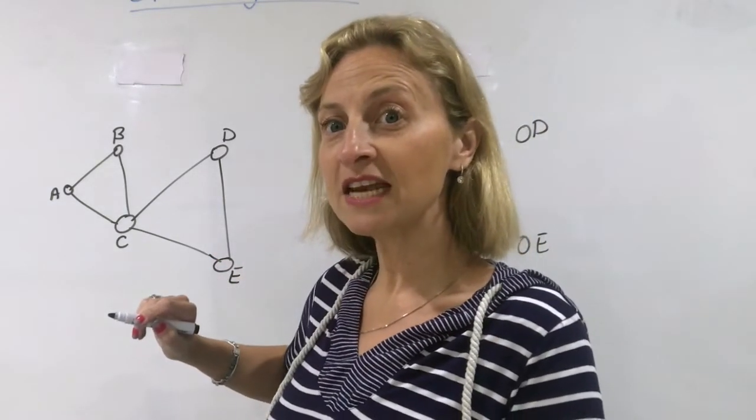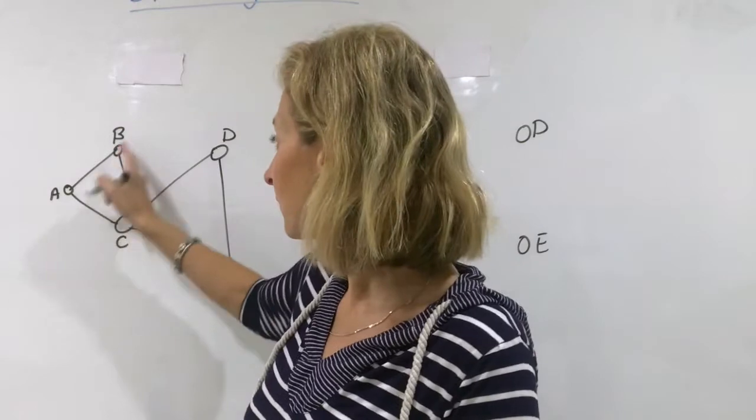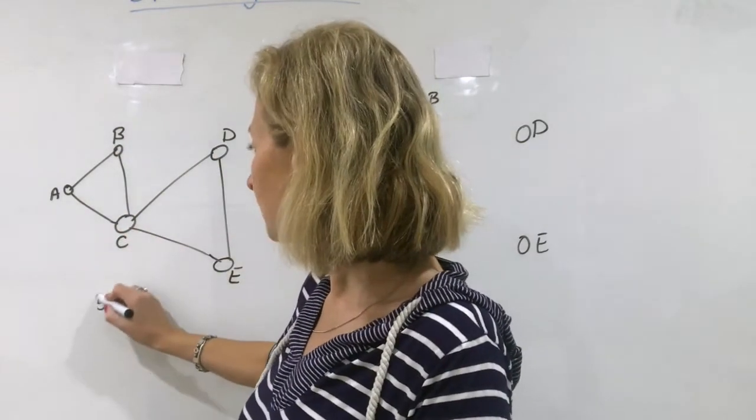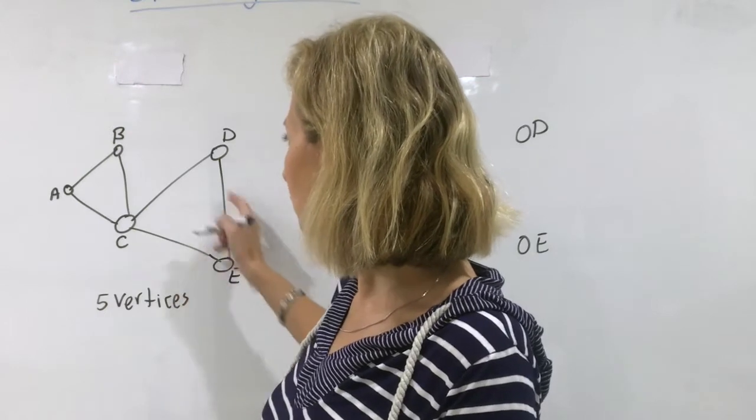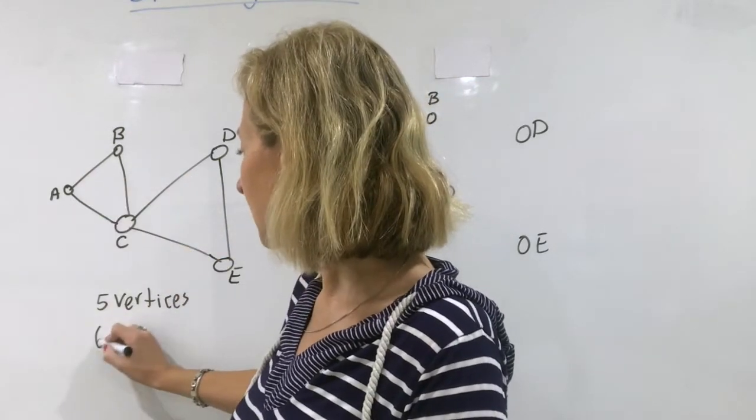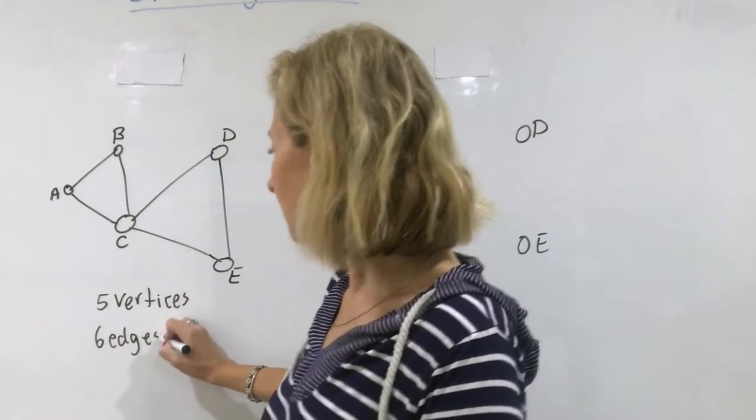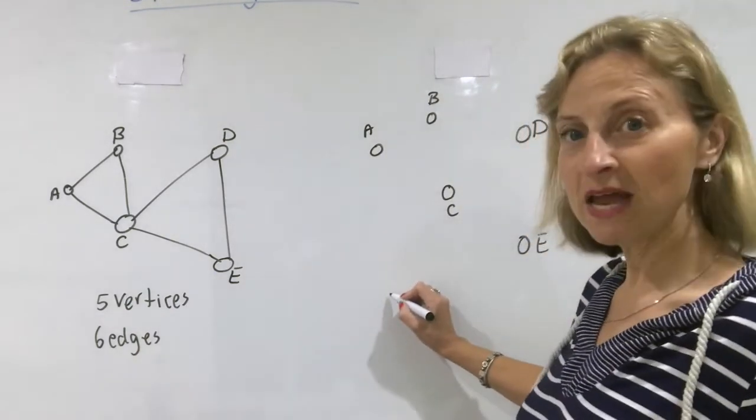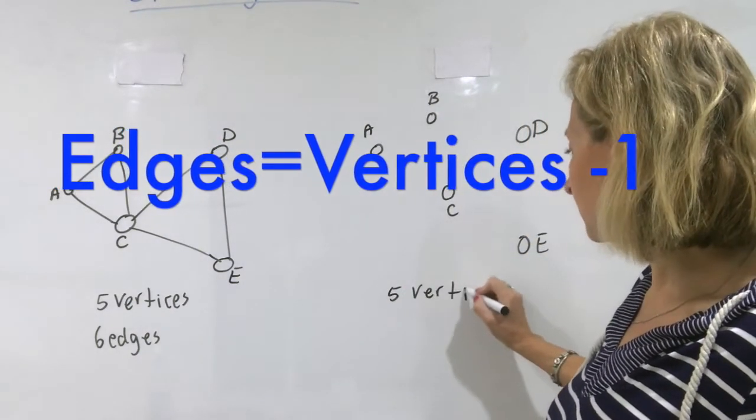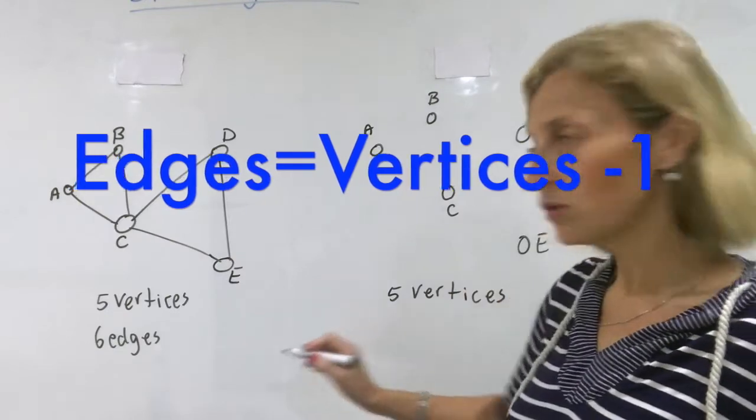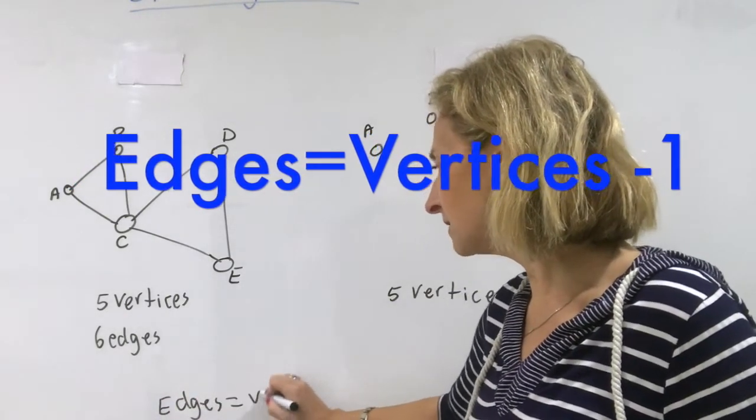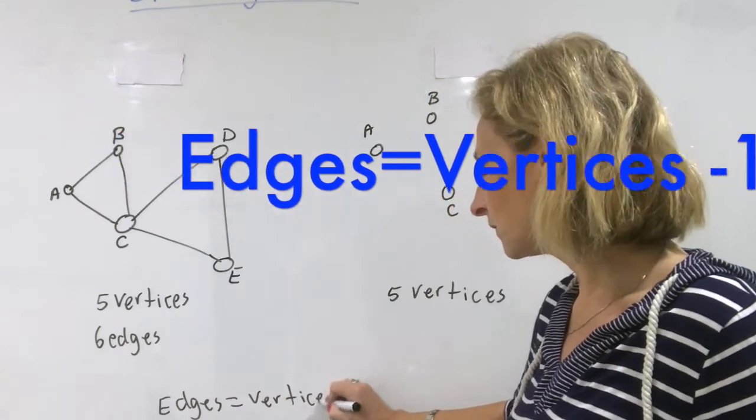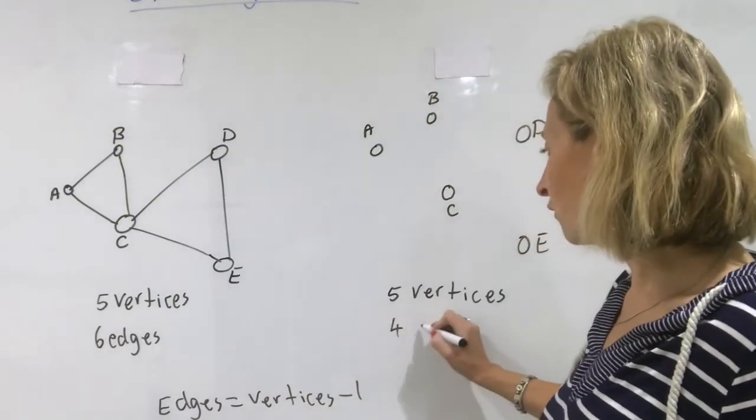Let's think about how many vertices and edges I have to start with. Five vertices. And how many edges? One, two, three, four, five, six edges. So how many do I need for my spanning tree? I still have to keep my five vertices. Remember the rule? Edges equals vertices minus one. So I need to have four edges.